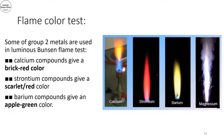We use the flame test to distinguish between different group 2 metals. Calcium produces a brick red color, strontium produces a scarlet red, and barium forms an apple green color. Magnesium, as seen before, forms a white color.